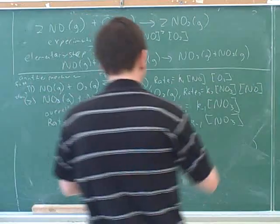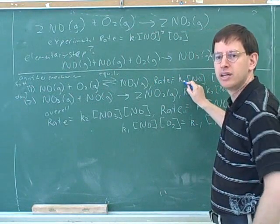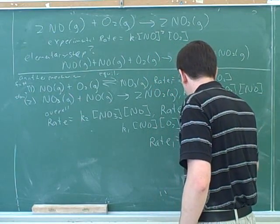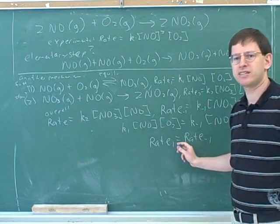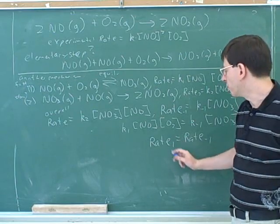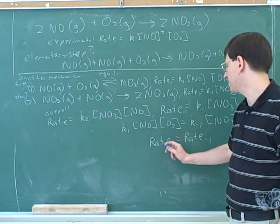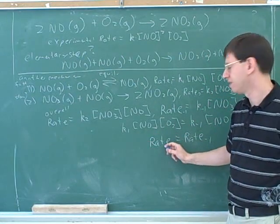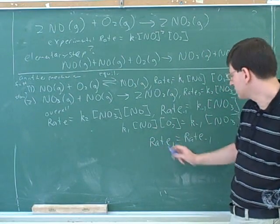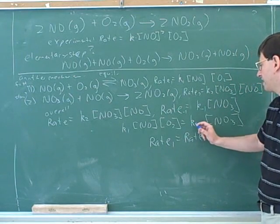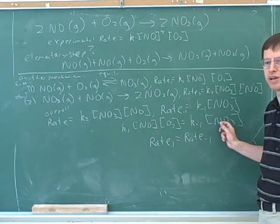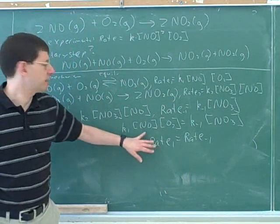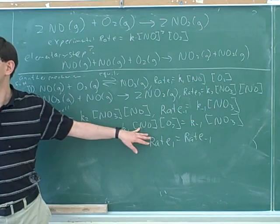Where did the K1 come from? That came from here. Okay. So what we're saying is the rate of the forward reaction from step one. Does this equation make sense? Yeah. But what is the forward rate from step one? It's this. These two things are the same. And what is the reverse rate expression? Well, it's exactly this. K sub negative one times the concentration of NO3.